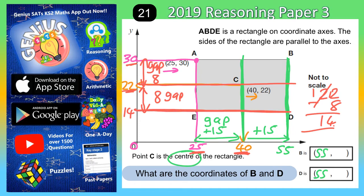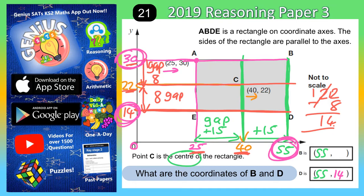So D is 55 along and 14 up, giving coordinates (55, 14). Whereas B is 55 along and level with 30 up the side, giving coordinates (55, 30). It really does help to draw lines across and down from the coordinates you've been given and label some numbers along the x-axis and up the y-axis.